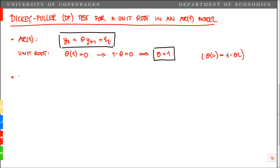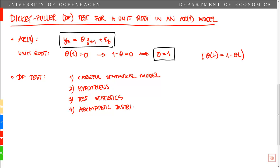We can test this using the Dickey Fuller test, DF test. We note a few things. First, we need a careful statistical model. Two, we need a hypothesis. Three, we need test statistics. And four, we need an asymptotic distribution of the test statistics under the null.